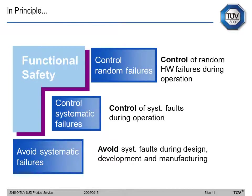In principle, what we are trying to do with functional safety is to control failures, which can be either random or systematic. For systematic failures, we are trying to avoid them at all costs by having a strong design, development, and manufacturing process.